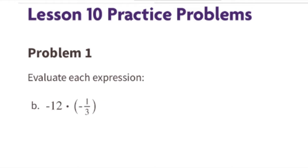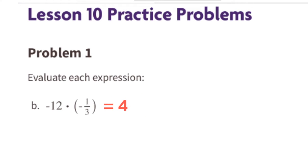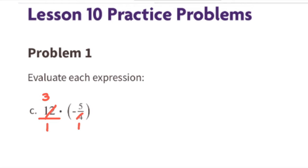Part B: negative 12 times negative one-third — that's the same as negative one-third of negative 12, or negative 12 divided by negative 3. A negative times a negative, or a negative divided by a negative, is a positive. So the value of this expression is positive 4.